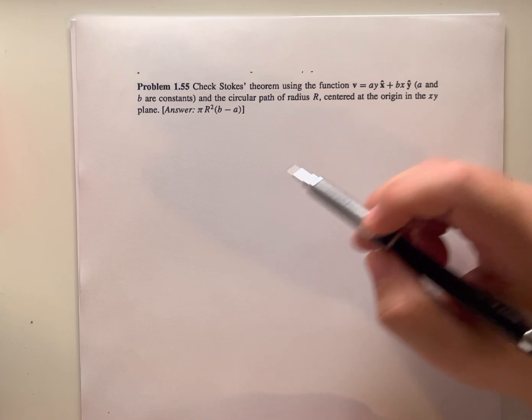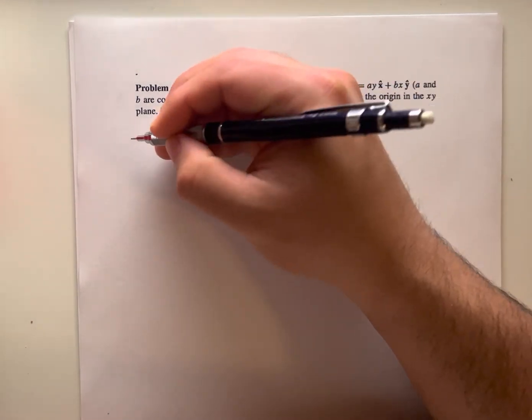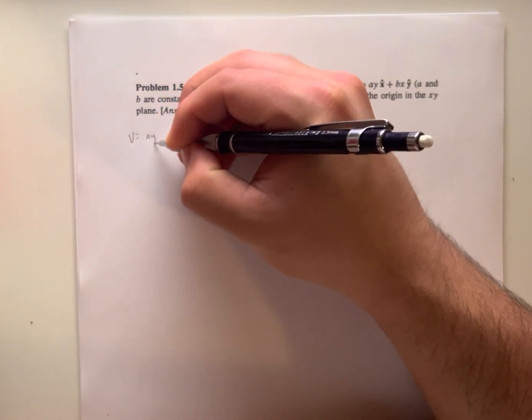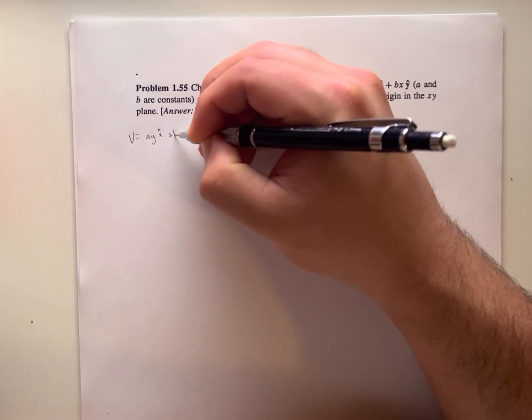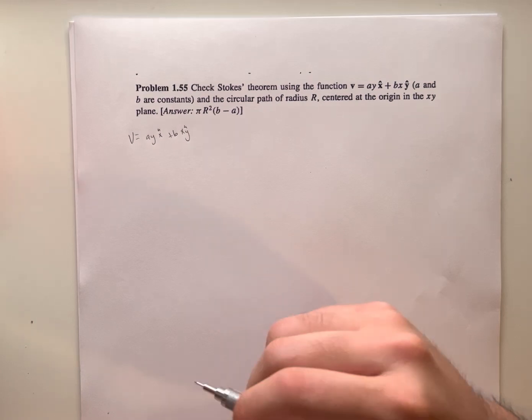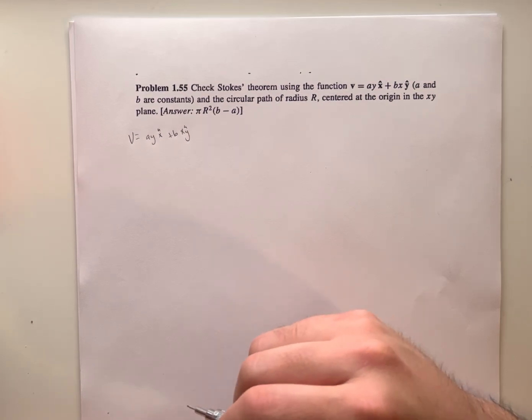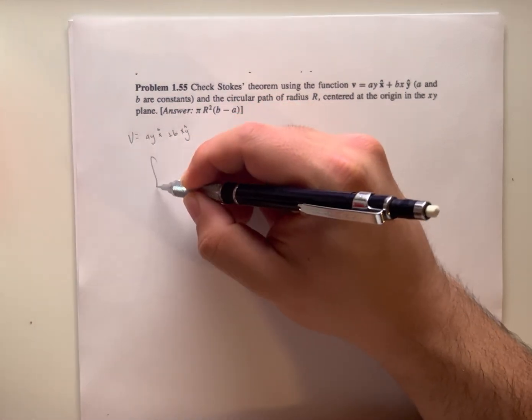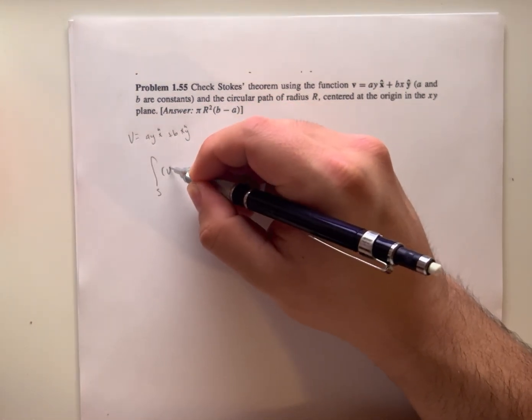So we're going to check Stokes' theorem using this given function v equals a*y*x-hat plus b*x*y-hat. Stokes' theorem states that the line integral of a vector field over a loop is equal to the flux of the curl through the enclosed surface, which is given to us in the book by this formula.